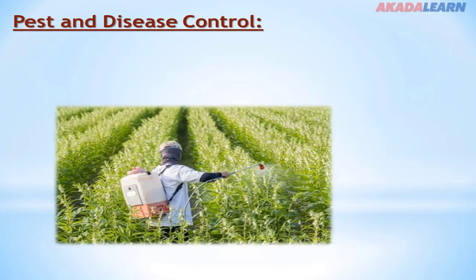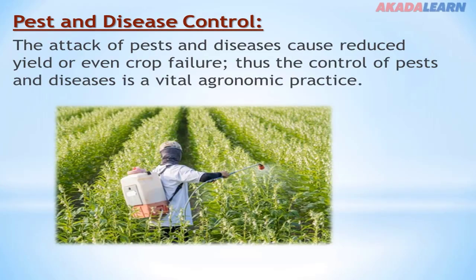Pest and disease control. The attack of pests and diseases causes reduced yields or even crop failure. Thus, the control of pests and diseases is a vital agronomic practice. Every agronomic enterprise has a target, and the target is yield. Anything that will reduce yield should be taken care of, most especially when it comes to pests and diseases.